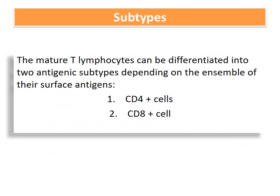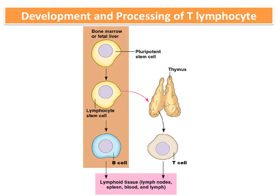At the end of maturation, these pre-processed T lymphocytes are designated into two antigenic subtypes based on their surface antigens: CD4-positive cells, which are mainly helper T cells, and CD8-positive cells, which are known as cytotoxic T cells.